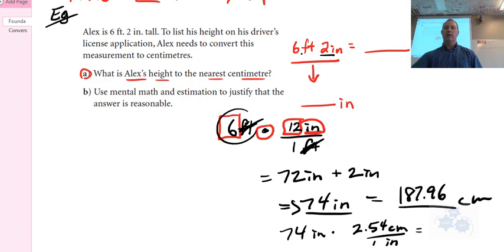187.96. So what's the answer to question A here, to the nearest centimeter? Our final answer would be 188 centimeters, because this is closest to 188.